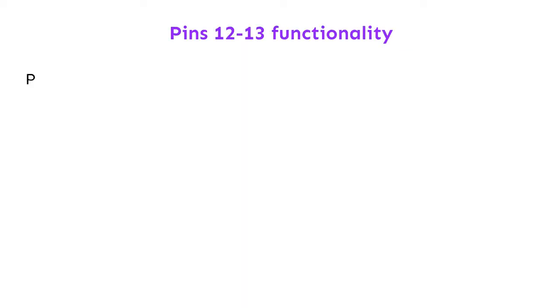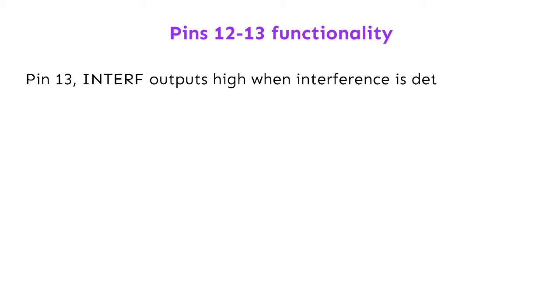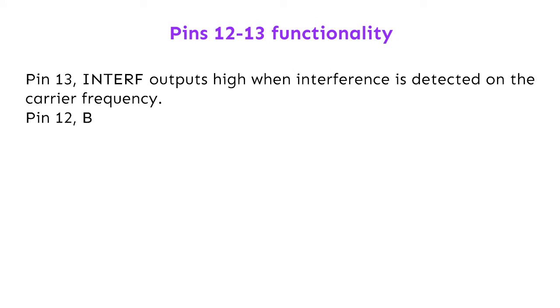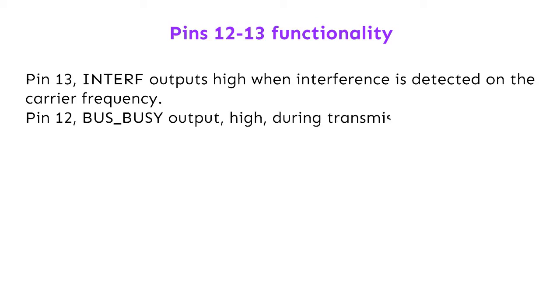Pin 13, interference output, goes high when interference is detected on the carrier frequency. Pin 12, bus busy output, goes high during transmission or reception on the powerline.